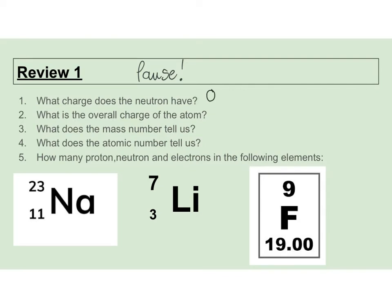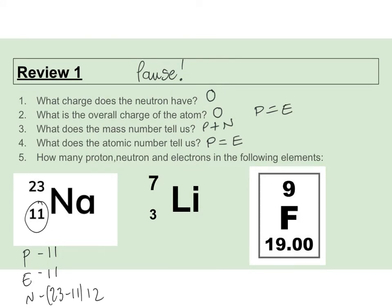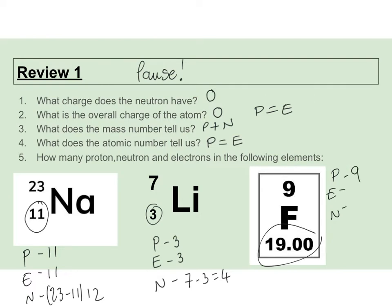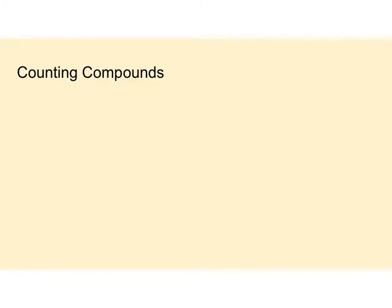What charge does a neutron have? Neutrons are neutral. What's the overall charge of an atom? Nothing, because protons and electrons are the same. What does the mass number tell us? The number of protons plus neutrons. What does the atomic number tell us? The number of protons, which equals the number of electrons. For the p, e, n calculations: 11, 11, and 12 neutrons (23 minus 11). Next: 3, 3, 4. Next: 9, 9, 10 neutrons (19 minus 9).